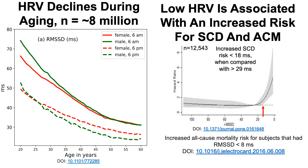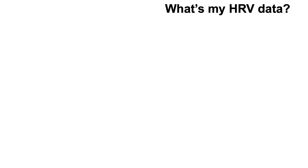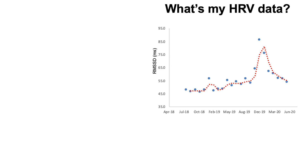Having higher RMSSD values may be important for cardiovascular health in general. It's also worth noting that both resting heart rate and heart rate variability decline with aging — so if you have a low RHR and a low HRV, that indicates worse cardiovascular fitness. This brings us back to the question of whether my declining resting heart rate reflects improved fitness or age-related decline, and heart rate variability can help clarify the picture.